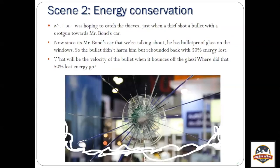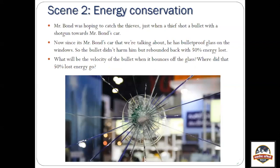Moving ahead, James Bond was hoping to catch the thieves when one of them fires a bullet with a shotgun toward Mr. Bond's car, damaging the windshield. When you do the analysis, you find out that the bullet didn't harm him but rebounded back with 50% of its energy lost. So the bullet travels toward the glass with certain speed, and when it rebounds back from this bulletproof glass, it has only 50% of its original kinetic energy.